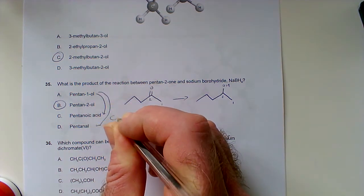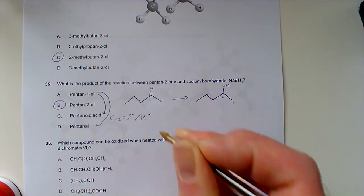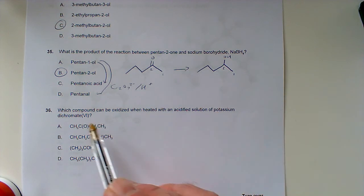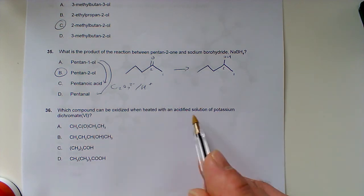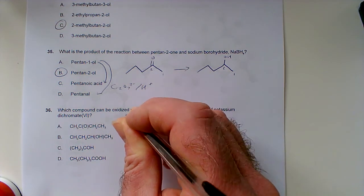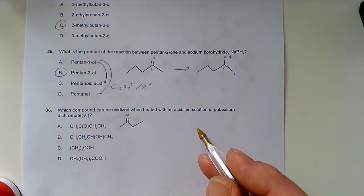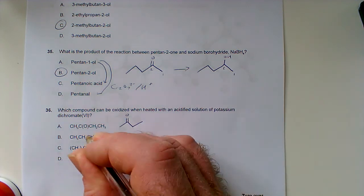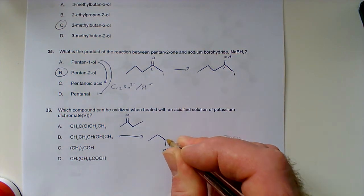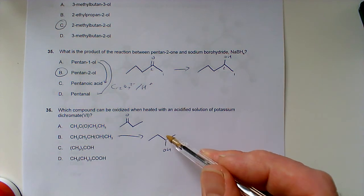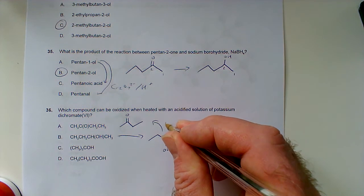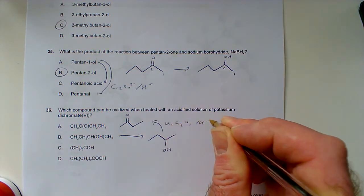Which compound can be oxidized when heated with acidified potassium dichromate? We always need the acid in there. Let me sketch them out. This is butan-2-ol—that's a secondary alcohol, so this will oxidize to give the ketone with potassium dichromate and acid. This looks like the winner.